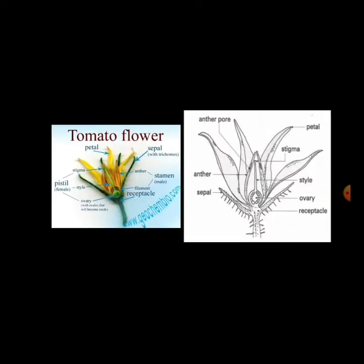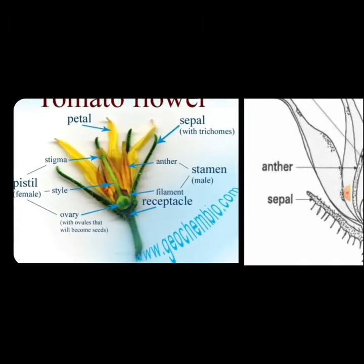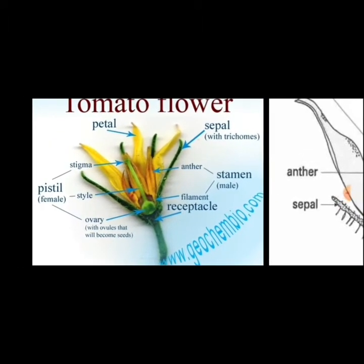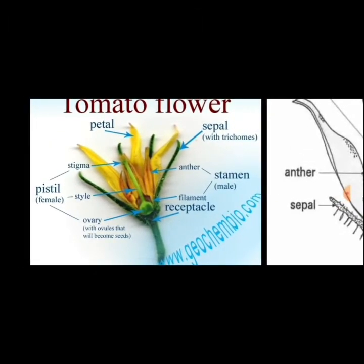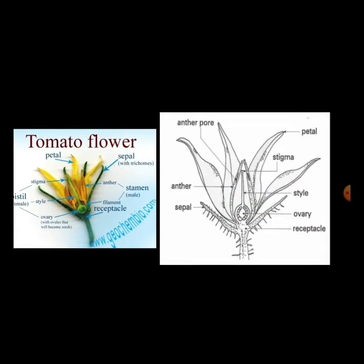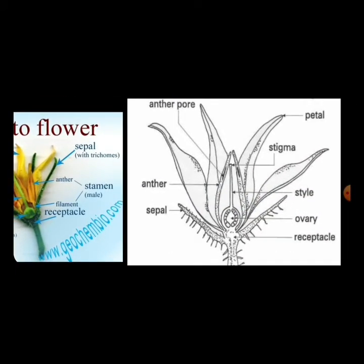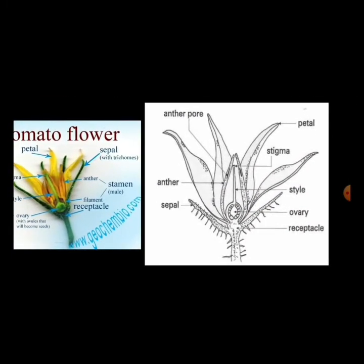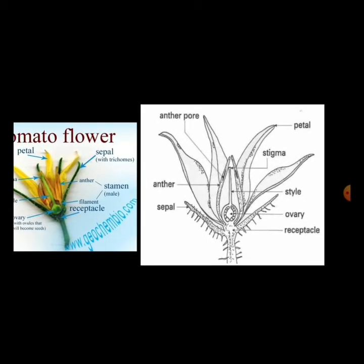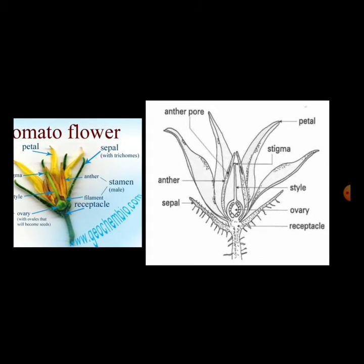Now this is the tomato flower. You can see the petal, sepal, stamen, anther, stigma, pistil, ovary, filament, and receptacle. These are the parts you can understand with the help of this diagram. This is the yellow color flower, and this is the flower which is colorless. In this you can easily see the anther pore, stigma, petal, style, ovary, receptacle, anther, and sepals.